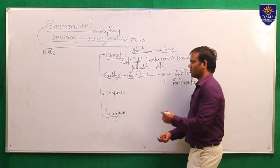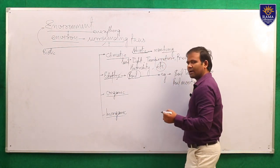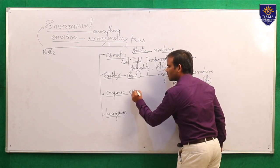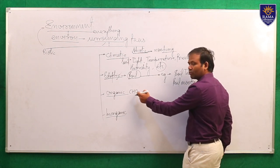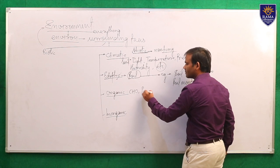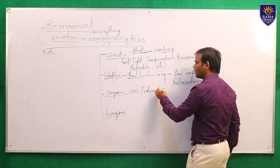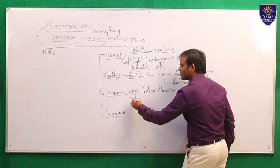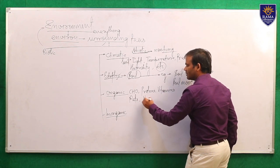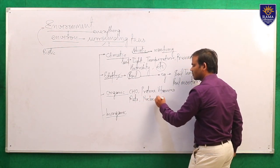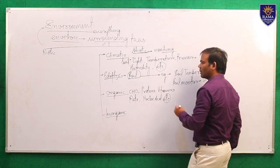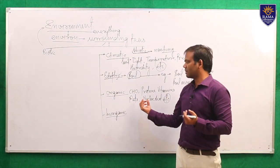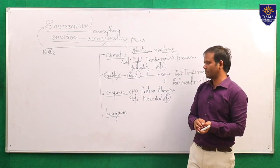What are organic factors? All those biomolecules you might have studied in school — like carbohydrates (CHO), proteins, vitamins, fats, nucleic acids, etc. — these are organic in nature. So whatever things are organic in nature in our surrounding come under the category of organic factors.